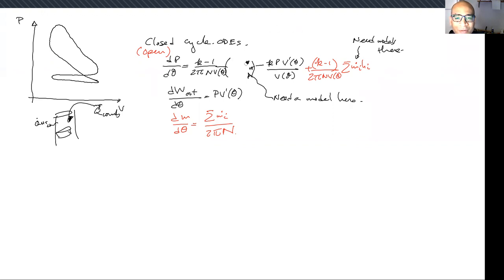Let me write these in blue just to make it clear this is where we need distinct models: Q_dot_combustion minus Q_dot_heat_transfer. And here I'm going to rewrite these, probably going to need a model for some of the enthalpies h_i, and here I need an m_dot_i over here.